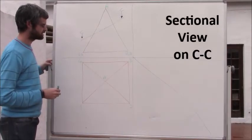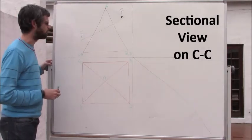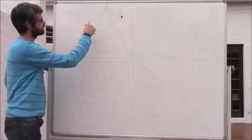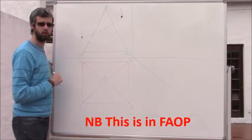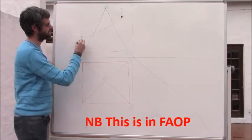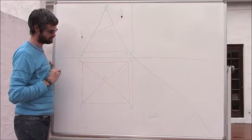To start a sectional view in solid geometry, we need to have the complete front view already drawn. We then also need to have the cutting plane, which you can see given there.